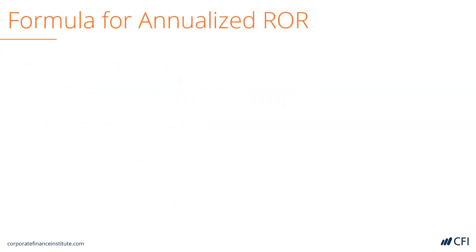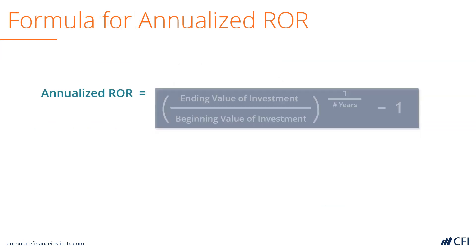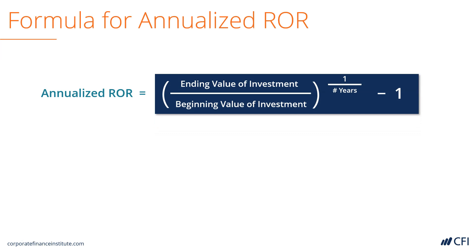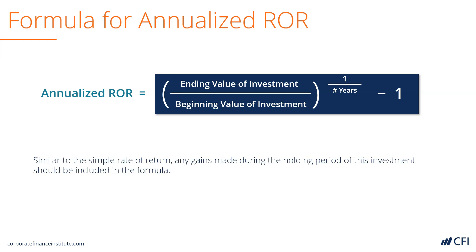When talking about rate of return, we also need to look at the annualized rate of return. Annualized rate of return is the rate of return specifically over one year. The formula is the ending value of the investment divided by the beginning value, to the power of 1 over the number of years in the period, minus 1. Any gains made, including dividends, need to be accounted for in this formula.